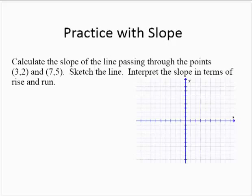Using that slope formula from the previous slide, we can think of the point (3, 2) as my x1, y1, and (7, 5) is my x2, y2. So then the slope m is equal to 5 subtract 2 over 7 subtract 3. 5 subtract 2 is 3, 7 subtract 3 is 4. So the slope is 3/4.